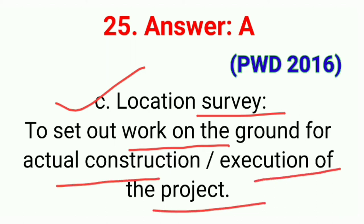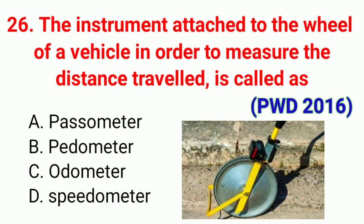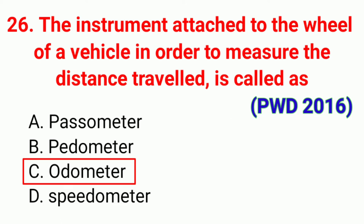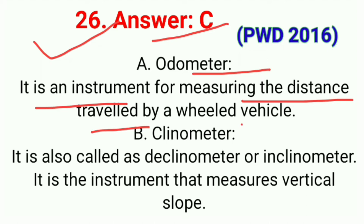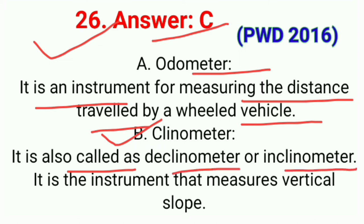Question number twenty-six: The instrument attached to the wheel of a vehicle in order to measure the distance travelled is called. The correct answer is option C, odometer. An odometer is an instrument for measuring the distance travelled by a wheeled vehicle. A clinometer, also known as a declinometer or inclinometer, is an instrument that measures vertical slope.